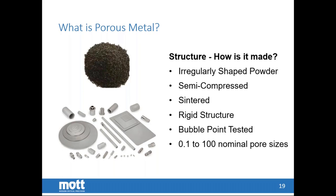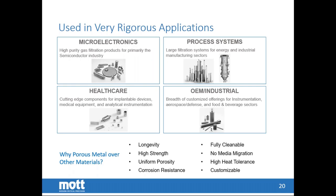After pressing, the sintering process follows — a diffusion bonding process using high temperature in a controlled atmosphere, which creates diffusion bonds between individual powder particles to provide mechanical and structural strength. Once the part is made, it is qualified using a bubble point test, which measures the pressure required to generate the first bubble from the porous media to define the pore size distribution and nominal pore size.